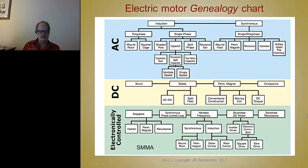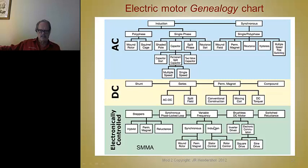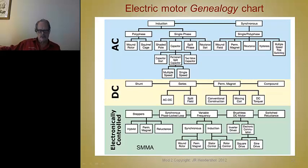This is the motor genealogy chart that we listed before. We're going to study the induction motor, which is electronically controlled, and the reluctance machine, which is also electronically controlled. We're going to study brushless DC motors — both sine drive and square drive, electronically commutated. And for induction, we're going to show you how to design rotors to get good performance with a stator.